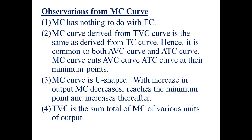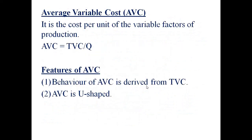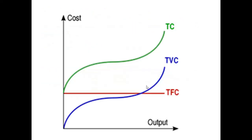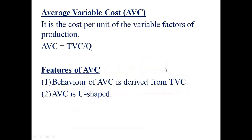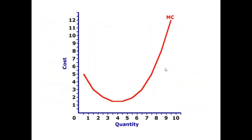The MC curve derived from the TVC curve is the same as derived from the TC curve. Whatever MC you derive — whether from TC or from TVC — it will be the same. For example, if MC derived from TC is one, then MC derived from TVC will also be one. Hence, MC derived from TC equals MC derived from TVC.